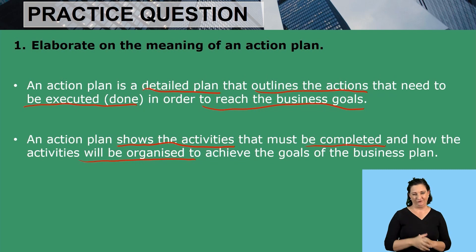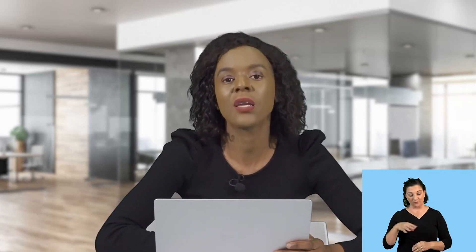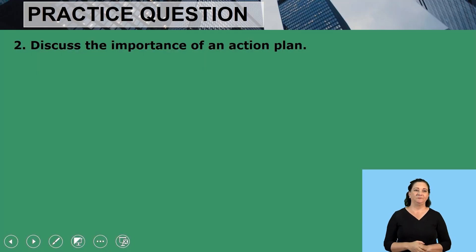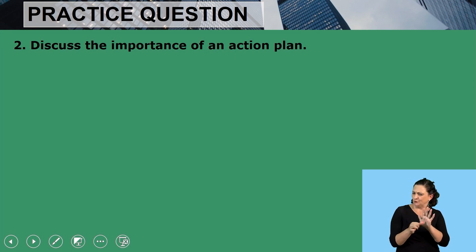Through an action plan we are able to see the activities that have to be completed and how they will be organized in order to achieve the goals written in a business plan. Remember, we are changing a business plan into an action plan, so our action plan is informed by our business plan. The second question says: discuss the importance of an action plan.